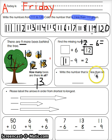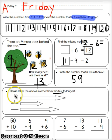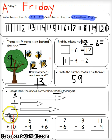Write the number that is one less than sixty — fifty-nine. Please label the arrows in order from shortest to longest. This one's the shortest, this is the longest, and this one's the one in the middle. When we have a big problem like fifty plus ten, I like to split it down the middle — do one side, then do the other.